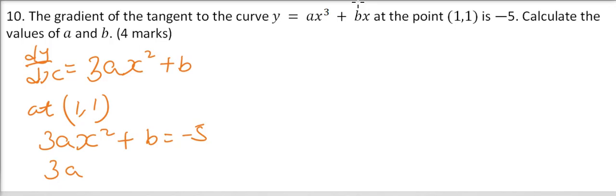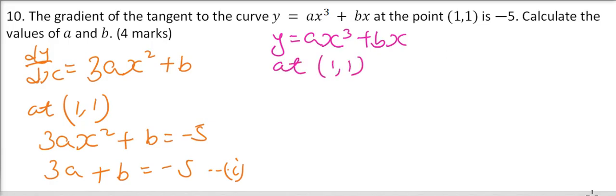We call that equation 1. Then again we are told that y equals ax cubed plus bx. So at the point (1,1) we can replace the value of x and the value of y is 1. So we say 1 equals a times 1 cubed is the same as 1, and you multiply by a remains the same, plus b multiplied by 1 that will give you b.